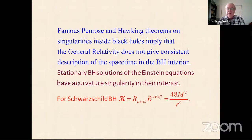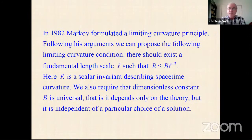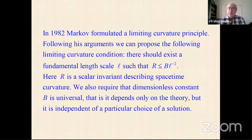For this reason, standard tools of general relativity — clocks and rulers — become inapplicable in the vicinity of singularities. To escape this unpleasant situation, Markov in 1982 proposed that a consistent theory of gravity must satisfy what is called the limiting curvature principle. The theory must require the existence of a fundamental length L such that the curvature of space-time never exceeds some constant divided by L squared.